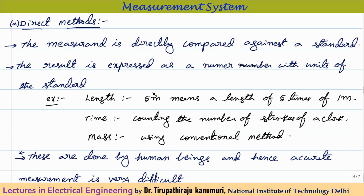For example, to measure a length of 5 meters, I use a 1-meter bar as my standard. I measure how many times it fits — if it fits 5.5 times, the length is 5.5 meters. Similarly, to measure time, I count the number of strokes of a clock — 60 strokes indicates 1 minute, since each stroke indicates 1 second. This is direct measurement.